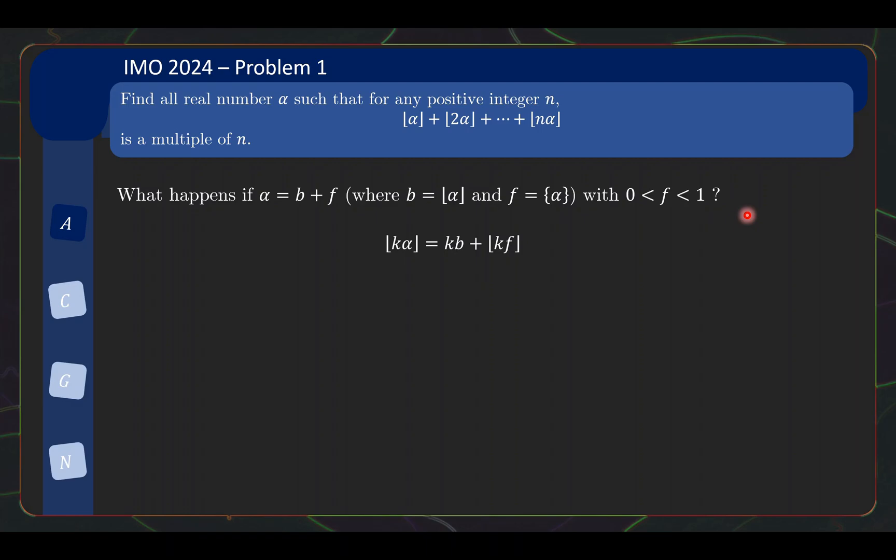What is really useful for the subsequent working is to realize that if we take the floor of k alpha, we can also understand this as kb plus the floor of kf. So indeed k alpha is kb plus kf, and because kb is an integer, you can take it out of the floor function without affecting the overall value of this whole thing. So note that kf can indeed be more than 1 or less than 1, it doesn't really matter, this expression is still valid. Do feel free to pause the video to ponder about this if this is not immediately clear. But this will be the key expression that will help us solve the rest of the problem.